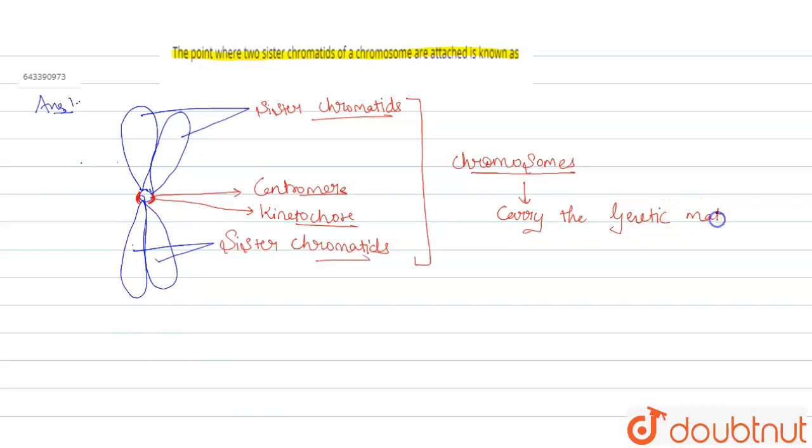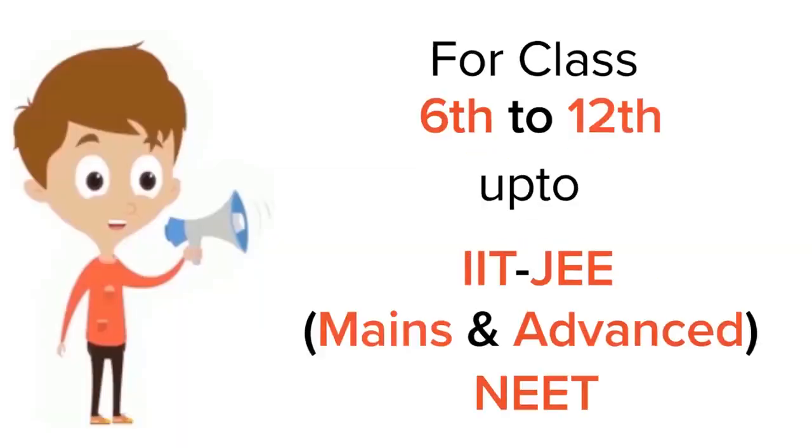Okay, so the question is: where are the two sister chromatids joined? At the centromere. Let me underline it here. So this is the centromere. Okay students, I hope you are satisfied with my answer. Thank you so much.